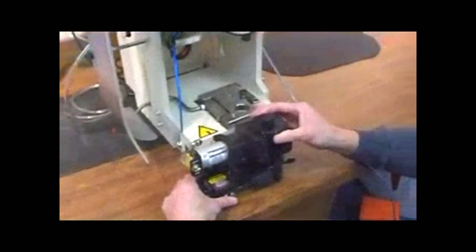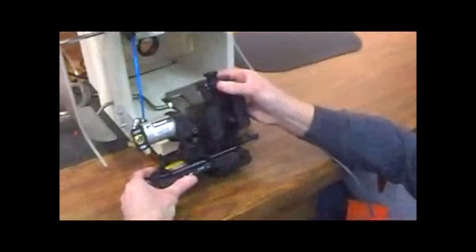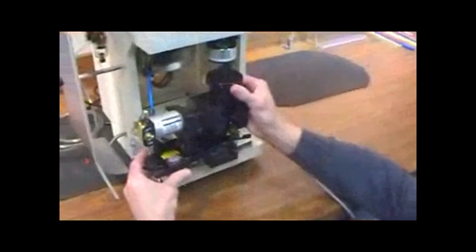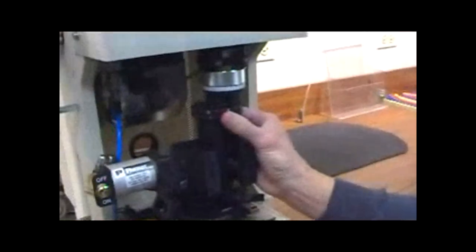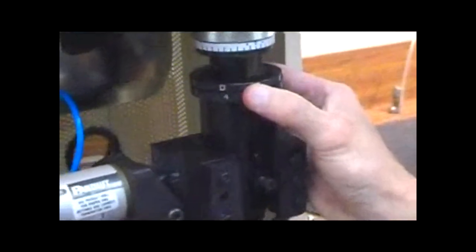In order to mount it into the press, all you want to do is pull the ram up, slide it up, and then you're going to interlock the collar on the ram with the collar on the press.